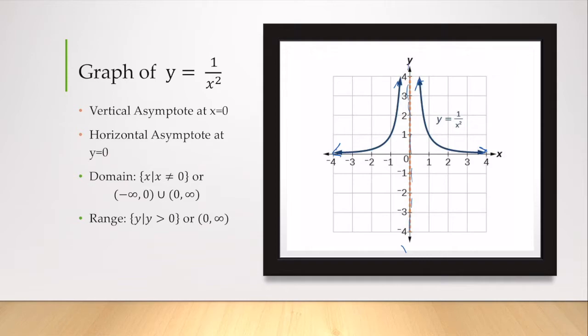Because 0 is excluded from my domain, and because if I square a negative number, it's always going to be positive, my y value can never be negative. So y is always going to be greater than 0, because it can never equal 0. And y equals 0 is our horizontal asymptote.